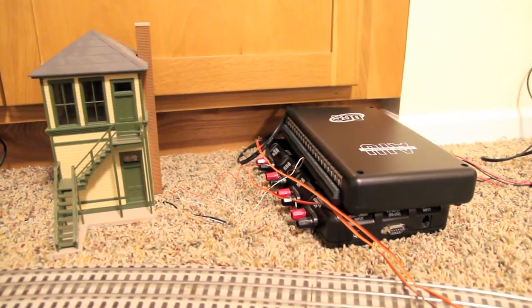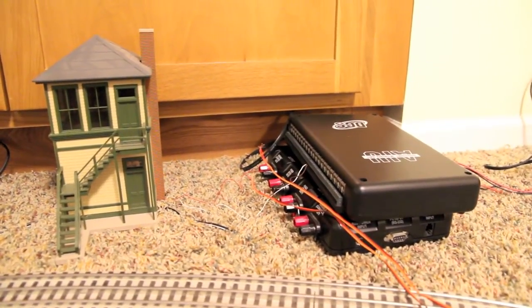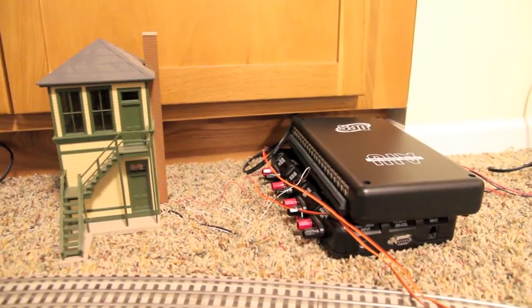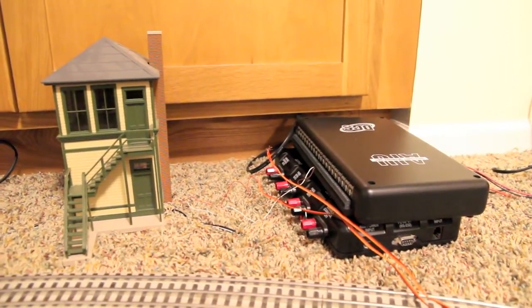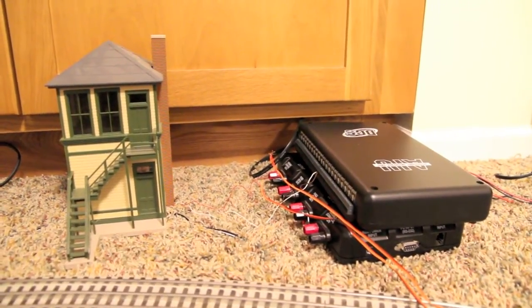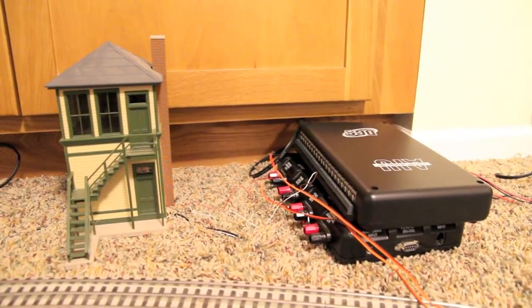I've had an accessory interface unit for DCS for a few years, and I've hooked up some switches to it a few times, but I've never tried to control a lighted building with the AIU.